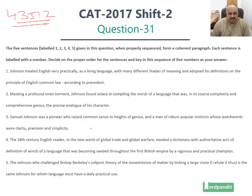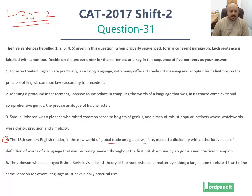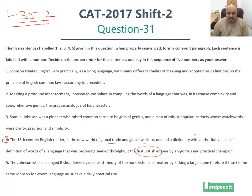If you look at this set of sentences very carefully, sentence number 4 is the most generic opening sentence here. The 18th century English reader, in the new world of global trade and global warfare, is setting up the context — needed a dictionary with authoritative definitions of words of a language that was becoming seeded through the first British empire. So during the first British empire, the language was spreading, and hence it needed a dictionary which was authoritative in nature which people could refer to.